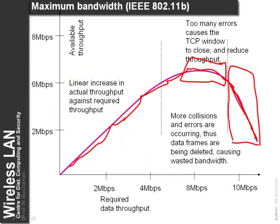Another observation is that in wireless networks as the required data rate increases, the actual throughput increases. But as we start to get near saturation there become many more collisions and errors. The TCP algorithm does not cope well with these errors and assumes there are problems on the line, starting to back off the TCP window. This means acknowledgements are required for sent packets, causing a folding of the window and an actual reduction in data rate as we reach saturation.